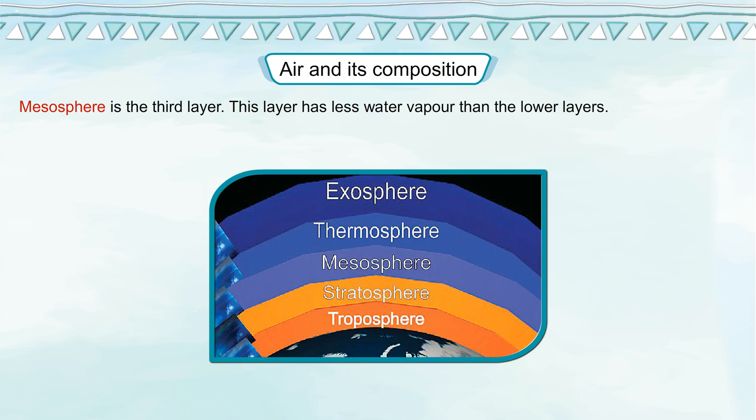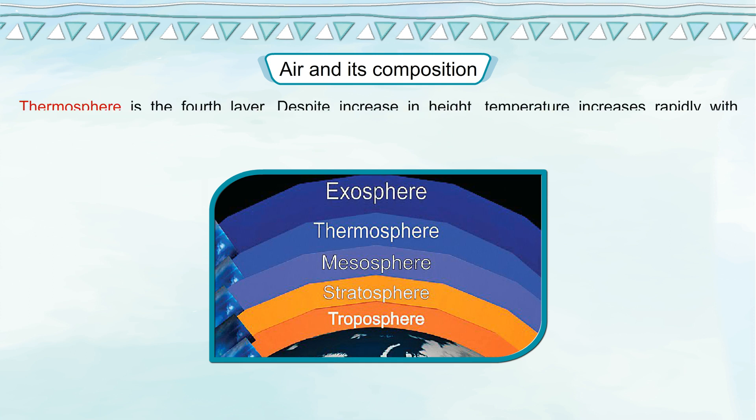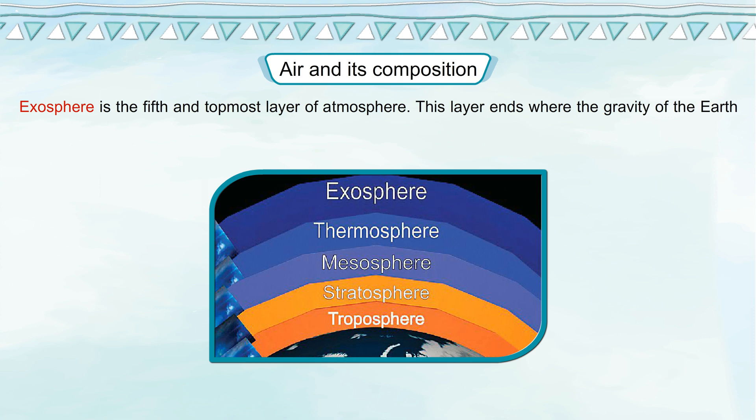Mesosphere is the third layer. This layer has less water vapor than the lower layers. Thermosphere is the fourth layer. Despite increase in height, temperature increases rapidly with altitude.